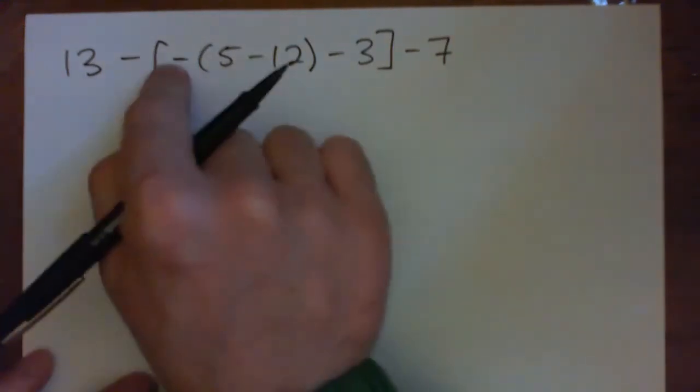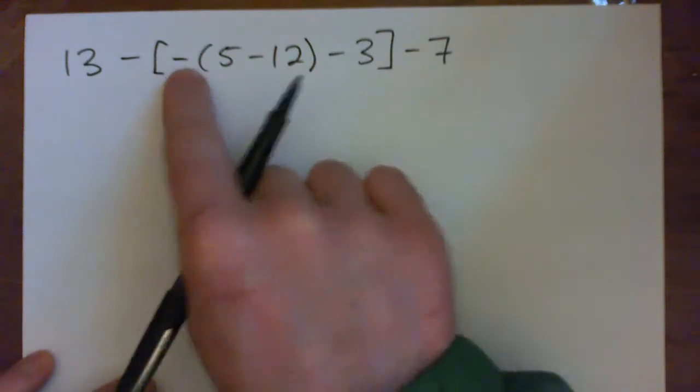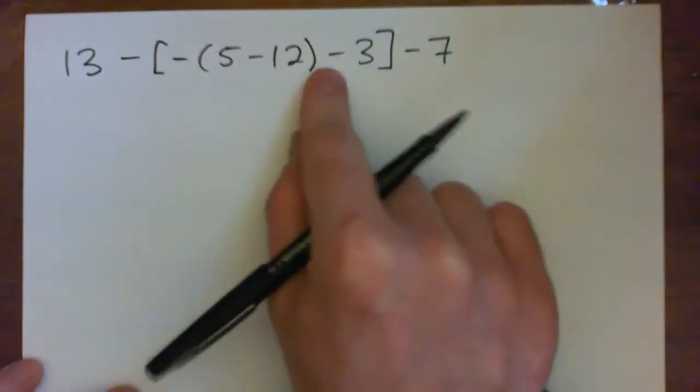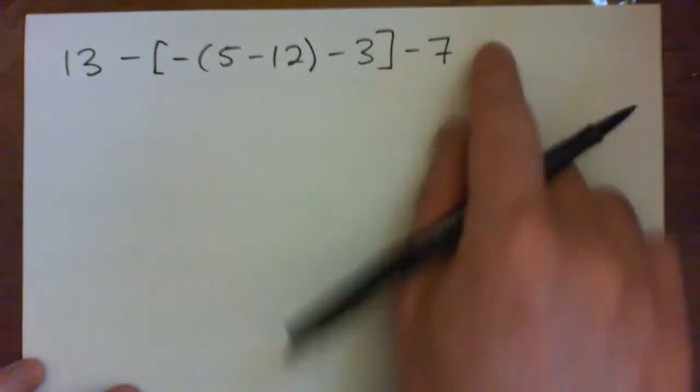Okay, let's go over this question: 13 minus square brackets, negative 5 minus 12 in parenthesis, minus 3, square bracket, minus 7.